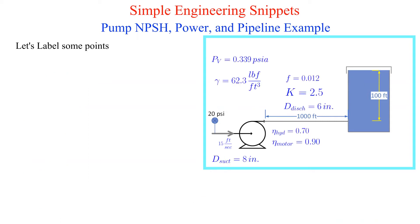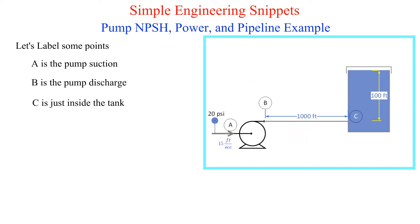Let's label some points. Alpha is the pump suction, Bravo is the pump discharge, Charlie is just inside the tank.